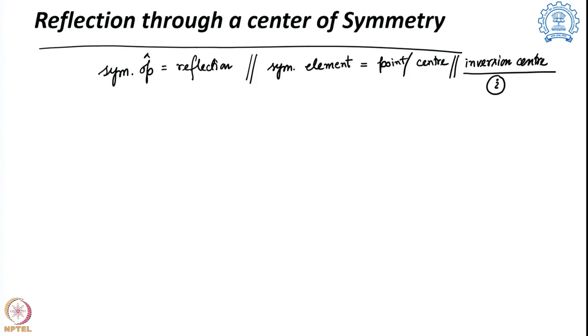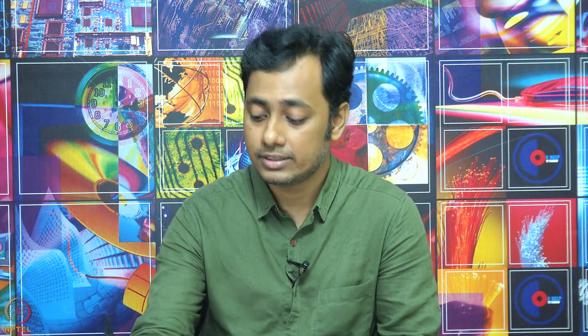As we have seen for all other symmetry elements: the rotational axis of symmetry is defined by Cn (with n as subscript), and reflection through a plane of symmetry is defined by sigma. Similarly, reflection through a center of symmetry is defined by I.